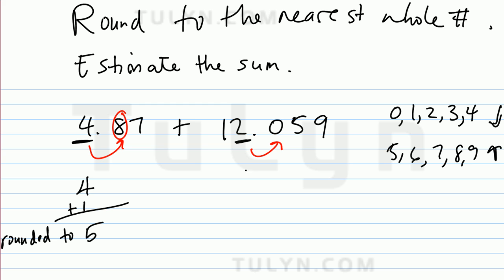And over here, you have zero, and that rounds down, so the two is going to remain the same, so it's just going to be twelve.